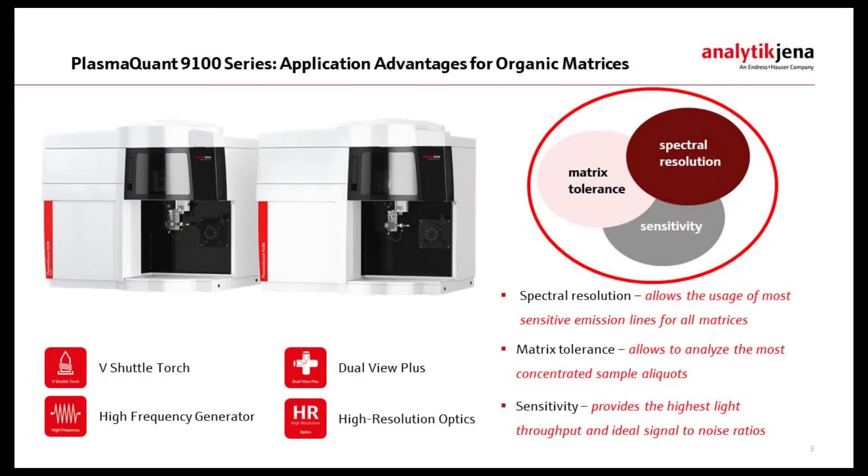Hello and welcome to this short video of Analytik Jena's PlasmaQuant 9100 showing the application advantages you gain from a high-resolution ICP-OES. Due to its unique features, the PlasmaQuant 9100 delivers most accurate and precise results in any sample type, including your most delicate organic applications like the trace elemental analysis in highly volatile naphtha or gasoline. In the following, we want to bring you closer to these unique features.